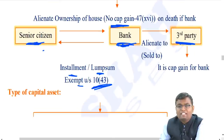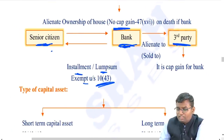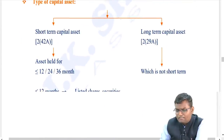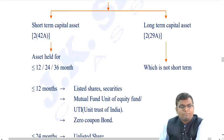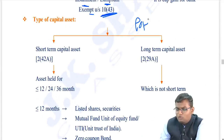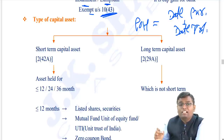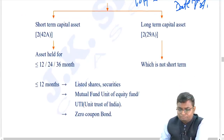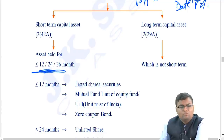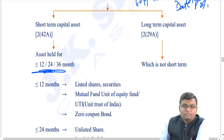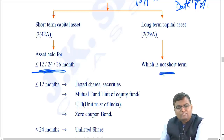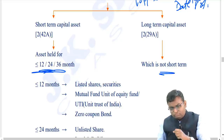There are two kinds of capital assets: short-term and long-term, depending on the period of holding - from the date of purchase to the date of transfer. If held for less than 12, 24, or 36 months (depending on asset type), it is short-term; if held for more, it is long-term.